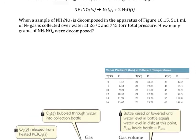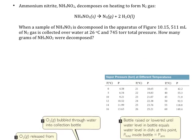Looking at this problem, they tell us the temperature and they also tell us the total pressure. We should know that the total pressure is going to be equal to the partial pressure of the nitrogen gas, since that's what we are forming, and the partial pressure of the water.